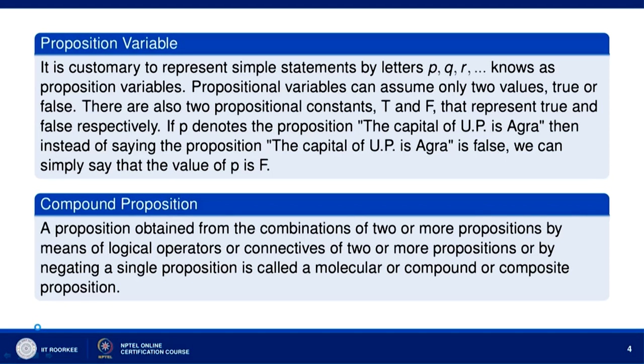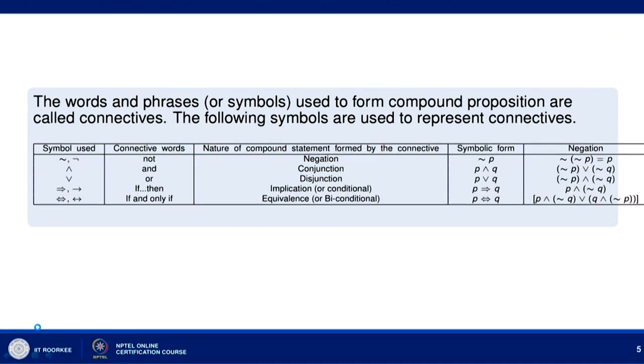A compound proposition is a proposition obtained from combinations of two or more propositions by means of logical connectives or logical operators, or by negating a single proposition. It is called a molecular, compound, or composite proposition. Let us look at the symbols and phrases used to form compound propositions — they are called connectives. The symbol for 'not' represents negation, and the nature of the compound statement formed is negation, written symbolically as not P.